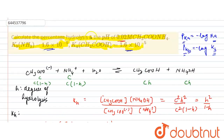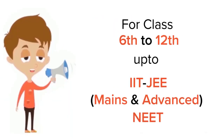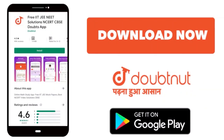So we have calculated the percentage hydrolysis as 98.8% and pH as 7. I hope you have understood. Thank you very much. For class 6 to 12, IIT and NEET level — trusted by more than 5 crore students. Download the Doubtnut app today.